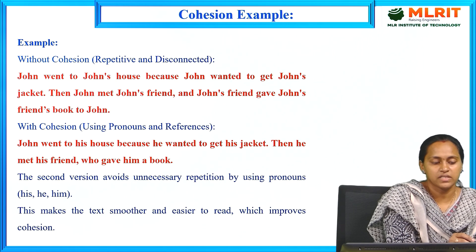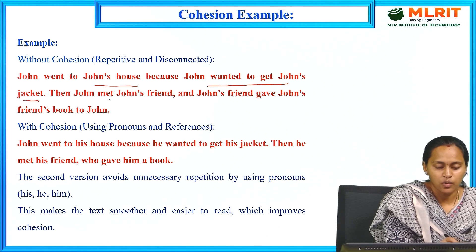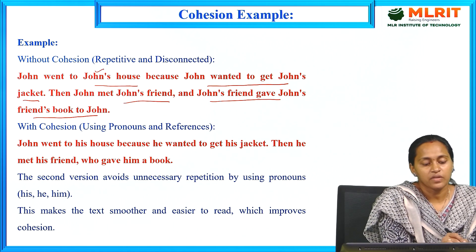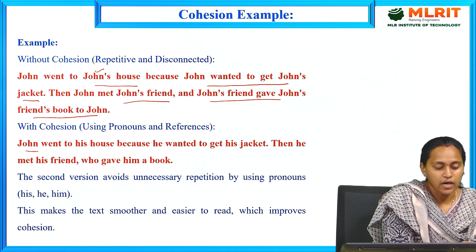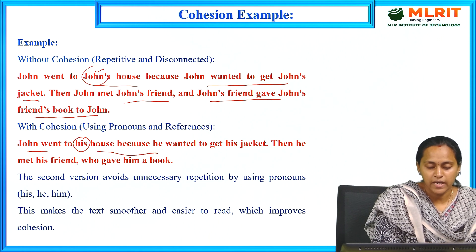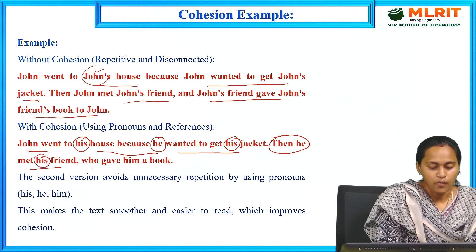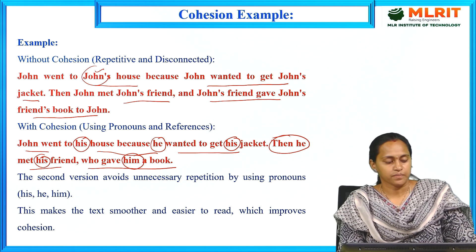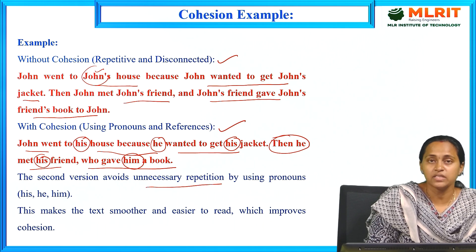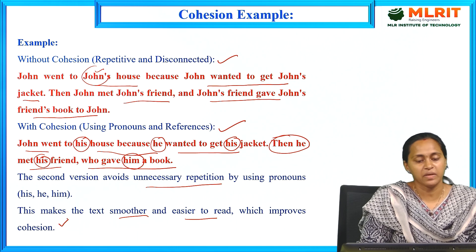Here is a cohesion example. Without cohesion: 'John went to John's house because John wanted to get John's jacket. John made John's friend. John's friend gave John's friend's book to John.' The repeating word is 'John's.' Applying cohesion to remove repetition: 'John went to his house because he wanted to get his jacket. Then he made his friend, who gave me a book.' This is with cohesion. The second sentence avoids unnecessary repetition by using pronouns instead of nouns, which makes the text smoother and easier to read.